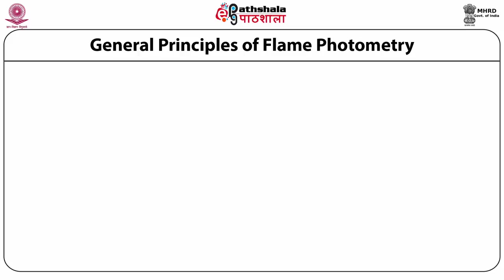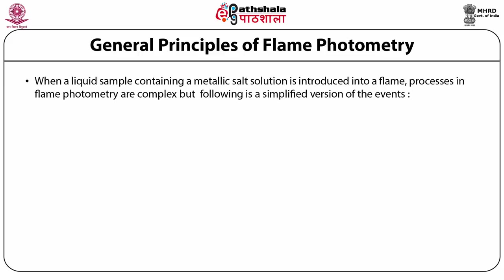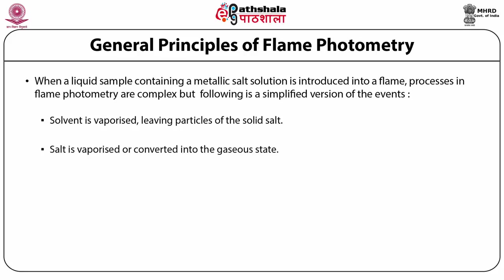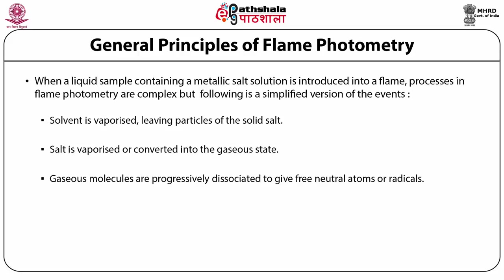The general principle of flame photometry: when a liquid sample containing a metallic salt solution is introduced into a flame, the processes are complex, but simplified as follows. The solvent is vaporized, leaving particles of the solid salt. The salt is vaporized into a gaseous state, and part or all of the gaseous molecules are progressively dissociated to give free neutral atoms or radicals. These neutral atoms are excited by the thermal energy of the flame. The excited atoms, which are unstable, quickly emit photons and return to a lower energy state, eventually reaching the unexcited state. The measurement of the emitted photons forms the basis of flame photometry.